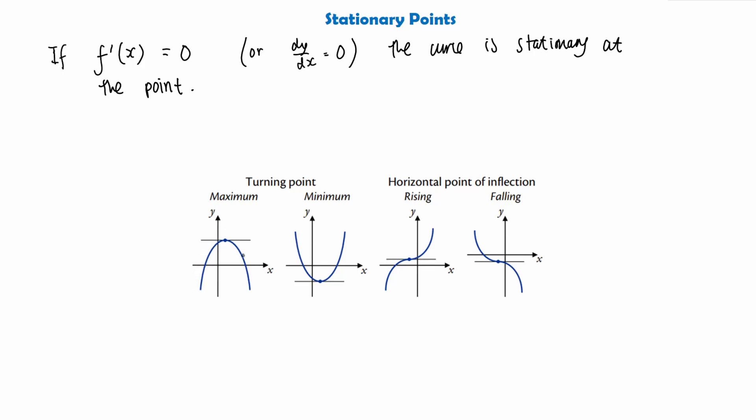As we can see we have this curve here and we have a maximum stationary point which is just the turning point of the curve, and the tangent at this point will have gradient 0. As we said in our straight lines topic, all horizontal lines will have gradient 0.